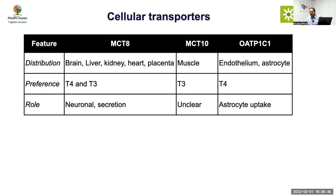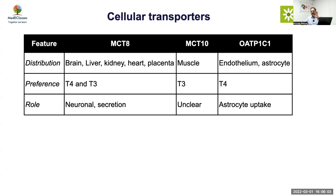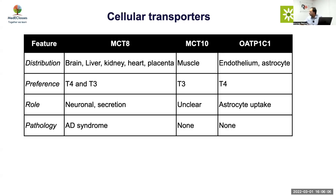MCT8 is also involved in secretion of thyroid hormone out of cells - not just entry. So if you don't have MCT8, exit will also be defective, meaning thyroid accumulates in the cell. Some will diffuse out through other mechanisms, making the biochemical picture very confusing - T4 is effectively trapped in thyroid cells, but when levels are very high, some release occurs through cell damage or other mechanisms.